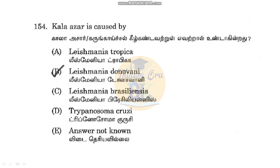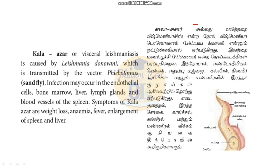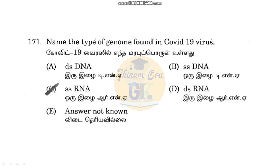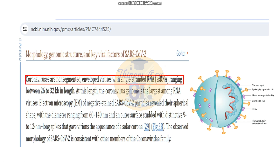What is the genetic material of the COVID-19 virus? The genome is single-stranded RNA. DNA is Deoxyribonucleic Acid, RNA is Ribonucleic Acid. DS means double-stranded, SS means single-stranded. Coronaviruses are enveloped viruses with single-stranded RNA. So COVID-19 has a single-stranded RNA genome.